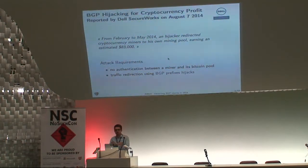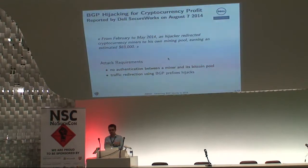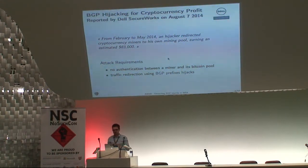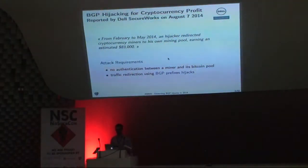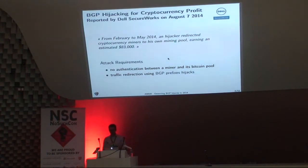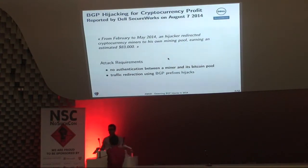Let's start with a recent example. Last August, researchers from Dell reported that someone — an attacker — managed to steal $83,000 worth of Bitcoins. This attack was possible thanks to BGP hijacks. The attacker took advantage of the fact that there is no authentication between miners — the software doing computation for Bitcoins or Litecoins — and the pool. By using BGP prefix hijacks, the attacker was able to pretend to be the pool and reconfigure the miners in order to steal money.